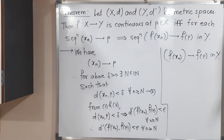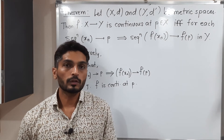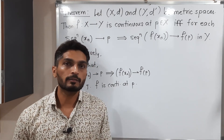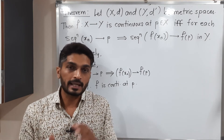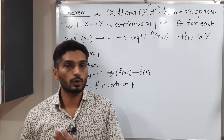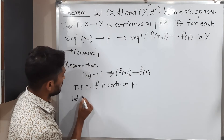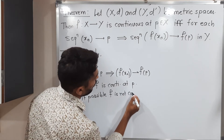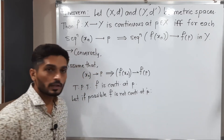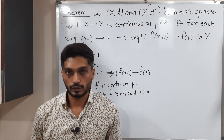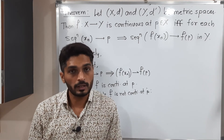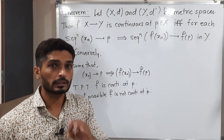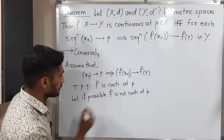Now for the converse: we assume that xn converges to p implies f(xn) converges to f(p), and we have to prove that f is continuous at p. We prove this by contradiction. So assume, if possible, that f is not continuous at p. If the function is not continuous, we write exactly the opposite of the definition of continuous function.